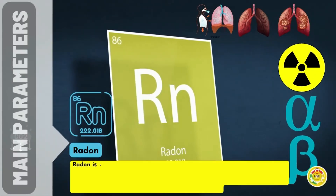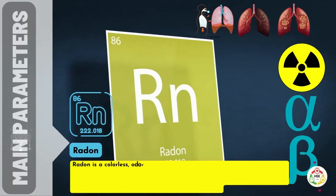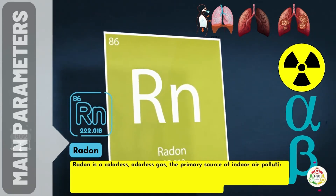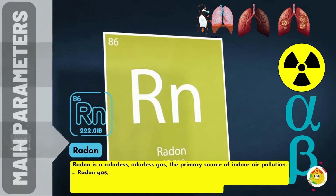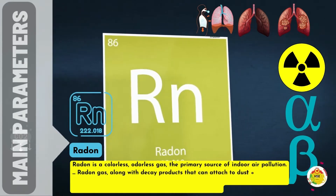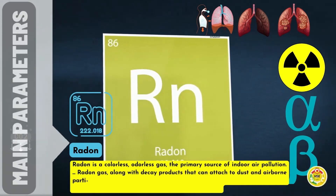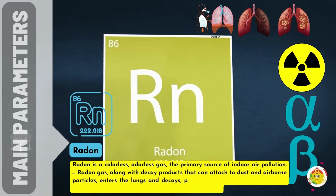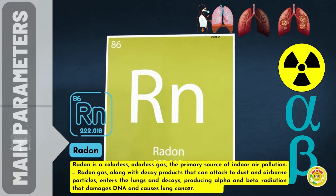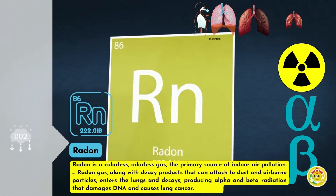Radon is a colorless, odorless gas and the primary source of indoor air pollution. Radon gas, along with decay products that can attach to dust and airborne particles, enters the lungs and decays, producing alpha and beta radiation that damages DNA and causes lung cancer.